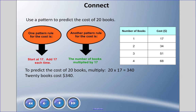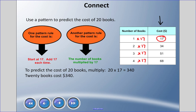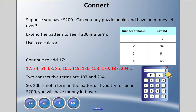We can use this pattern to predict the cost of twenty books. A pattern rule we could say is: start at seventeen and add seventeen each time. Or we could say: number of books multiplied by seventeen. To predict the cost of twenty books, we multiply twenty times seventeen, and the answer is three hundred and forty dollars.